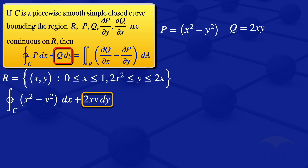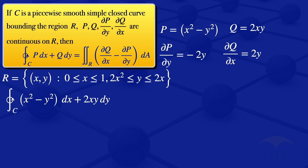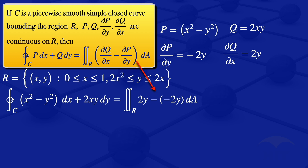Now we evaluate the partial derivatives. The partial derivative of P with respect to y equals negative 2y. The partial derivative of Q with respect to x equals 2y. Substituting these into Green's theorem gives the double integral over the region R of 2y minus negative 2y dA, which simplifies to 4y.